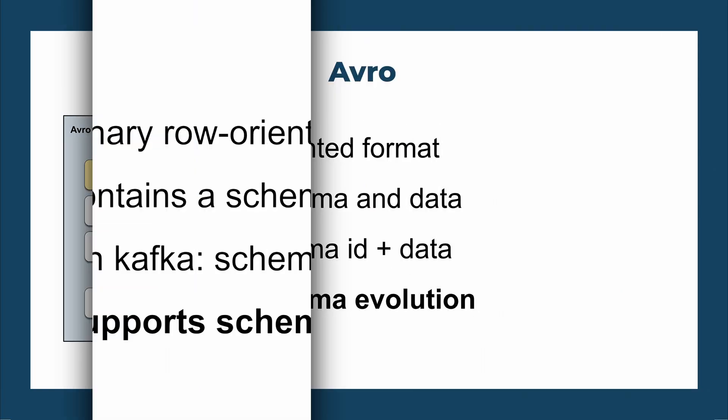Avro also supports schema evolution. In the Kafka world, that's managed by the schema registry. This means that if your schema is running in production for months and needs to change — and it always does eventually — you have the tools to modify your schema and validate whether the two versions are compatible. If you don't break compatibility you can avoid a major version upgrade, which can be pretty complex. So that was Avro: the row-oriented format optimized for the operational plane.